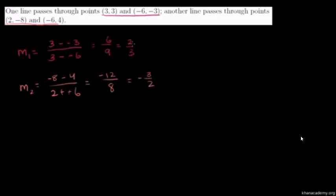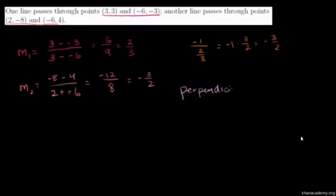Notice — these slopes are the negative inverse of each other. If I take negative 1 over 2 thirds, that equals negative 1 times 3 halves, which equals negative 3 halves. You swap the numerator and the denominator and make it negative, and they become equal to each other. So these two lines are perpendicular. I encourage you to find the equations of both lines, plot them, and verify for yourself that they are perpendicular.